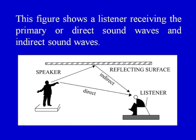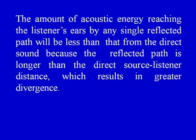This persistence of sound is called reverberation. The sound without reverberation is known as dead sound. The sound that reaches a listener in a fairly typical auditorium or room can be classified into two broad categories: the direct sound and the indirect sound. The amount of acoustic energy reaching the listener's ears by any single reflected path will be less than that from the direct sound, because the reflected path is longer, resulting in greater divergence and hence greater loss.